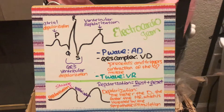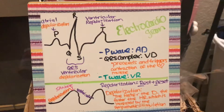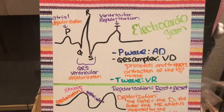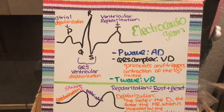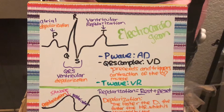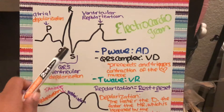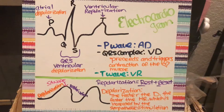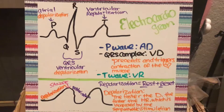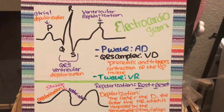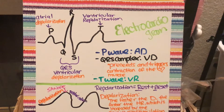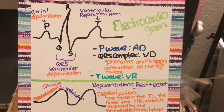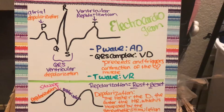The ECG consists of your PQRST. You have atrial depolarization, which is your P wave. You have your QRS complex, which is your ventricular depolarization. And then you have your T wave, which is your ventricular repolarization. The QRS complex is what proceeds and triggers contraction of the heart muscle.